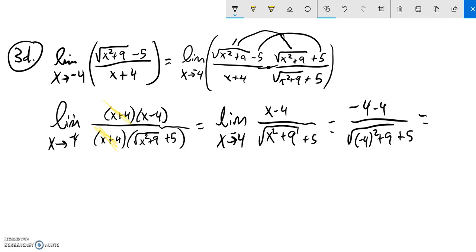Negative four minus four is negative eight. Negative four squared is 16. 16 plus nine is 25. Square root of 25 is five. So I have five plus five in the denominator, which is 10. Negative eight over 10, that's negative four fifths. You could also say negative 0.8. Both are beautiful answers.